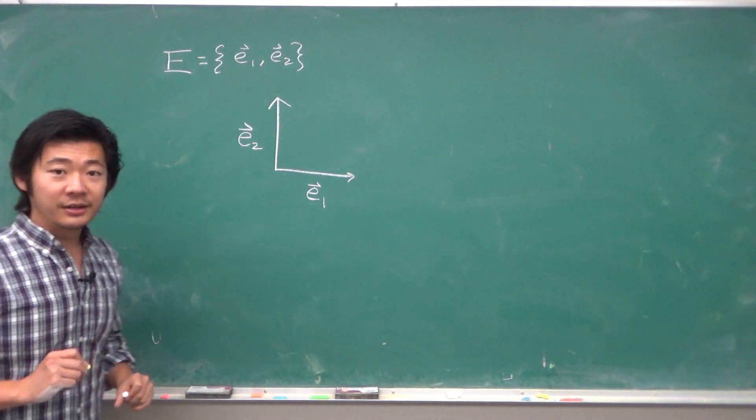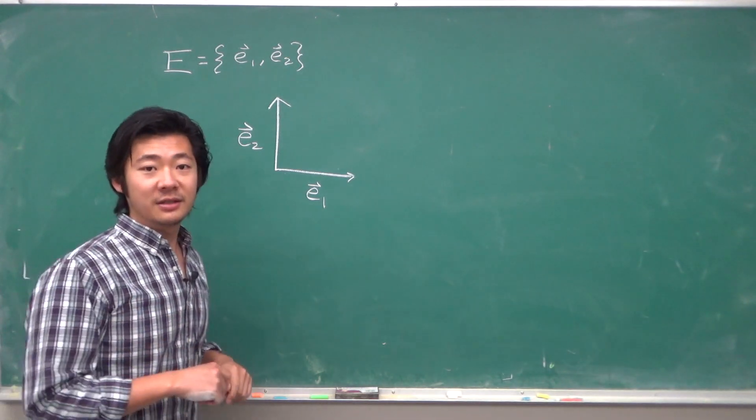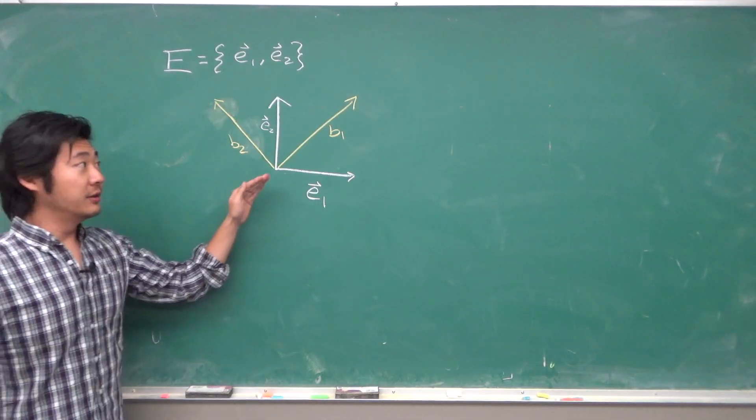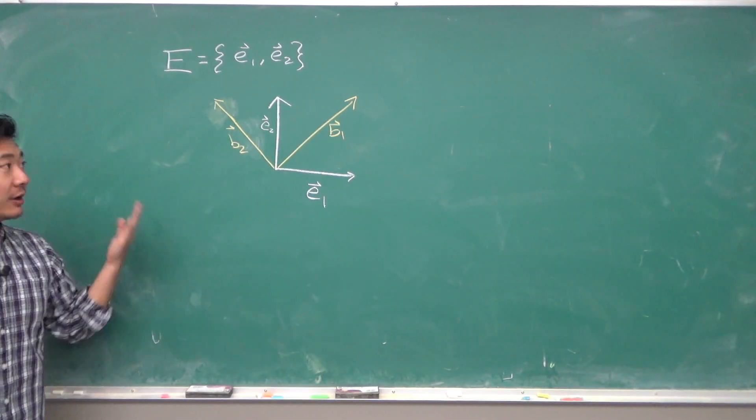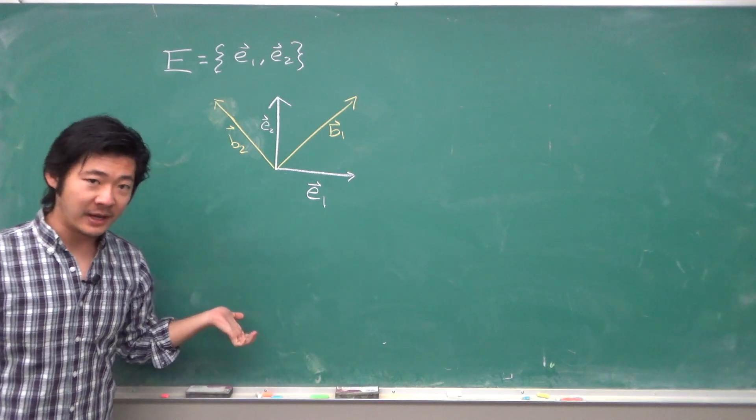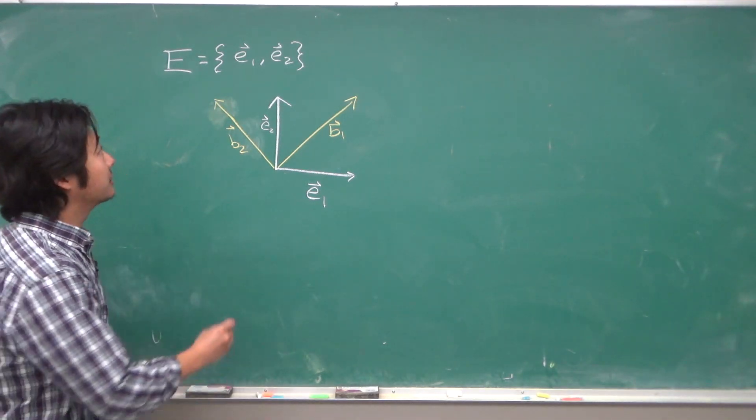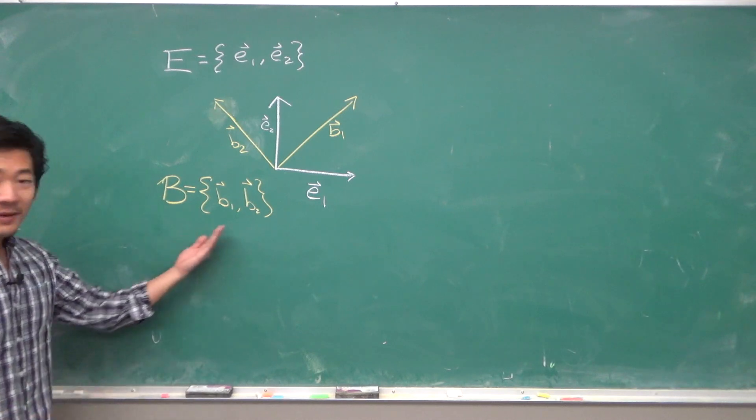Next, consider another set of linearly independent vectors. So let's just take this direction and this direction, right? Call this one B1 and this direction B2. Well, it's linearly independent and also spanning, so it's another basis. Technically, it's an ordered basis. The order matters.